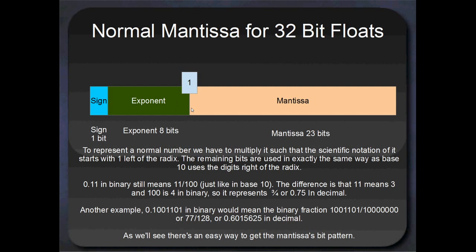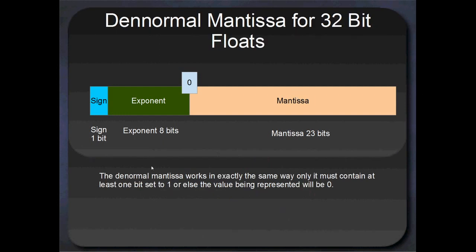The mantissa is really just the digits right of the radix point, and in binary they mean almost exactly the same thing as in base 10. Something like 0.11 in binary still means the fraction 11 over 100 — except 11 in binary means 3, and 100 means 4, so it actually means 3 quarters, or 0.75. There's a really easy way to get the mantissa bits one after another, which we'll have a look at in just a second. The denormal mantissa works in almost exactly the same way, only there's a 0 implied at the start by the exponent instead of a 1.